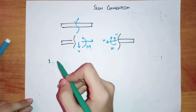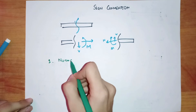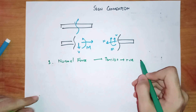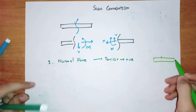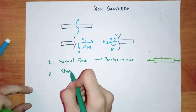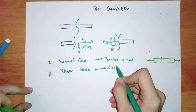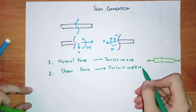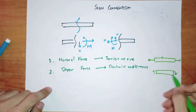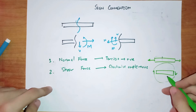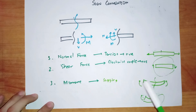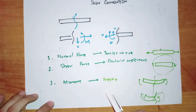If you think you might forget about it, you could think of it this way: if a normal force produces tension in a segment, then it would be positive. If the shear force produces a clockwise couple, it would be considered as positive. Like in this segment, if the shear force is producing a clockwise couple moment — it's trying to rotate the segment in a clockwise direction — hence we take shear force as positive. And if the moment produces sagging in the beam, this kind of shape, then we would consider the moment as positive.